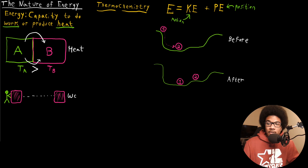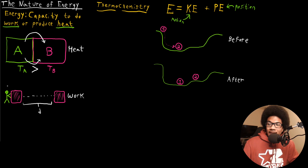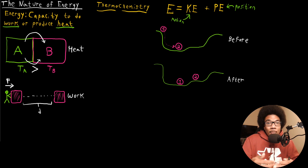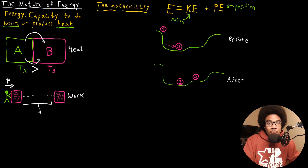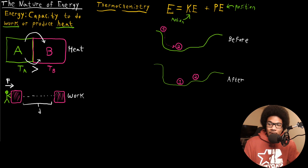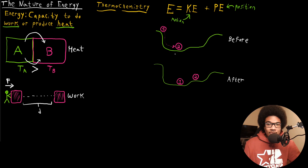Now, what is work? Using this figure — a classic example — you have a guy pushing a block. The block moves some distance D because there's an applied force F. An applied force on that block allows it to move a certain distance. If you apply a small force, it'll move a small distance or none at all; if you apply a large force, it'll move a much greater distance. So work is a force applied over a distance.